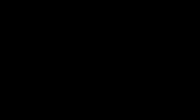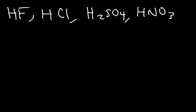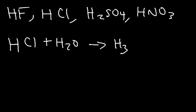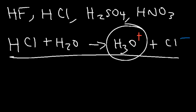Examples of Arrhenius acids include HF (hydrofluoric acid), HCl (hydrochloric acid), H2SO4 (sulfuric acid), and HNO3 (nitric acid). All of these acids have a hydrogen in front of them. If you put HCl in water, hydrochloric acid will dissociate, donating a hydrogen to water to create the hydronium ion and the conjugate base chloride. An Arrhenius acid releases hydronium ions into solution.